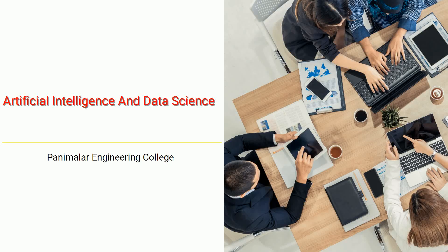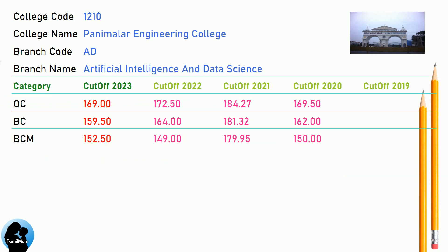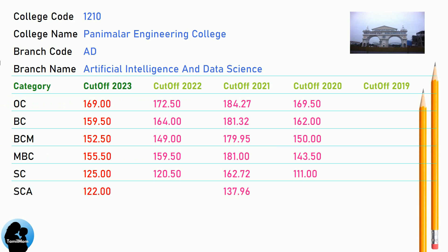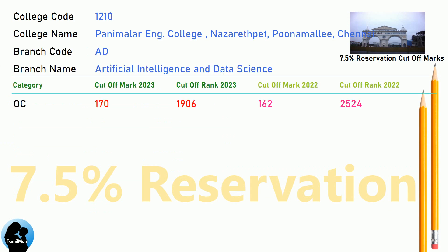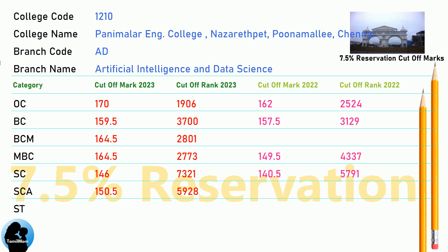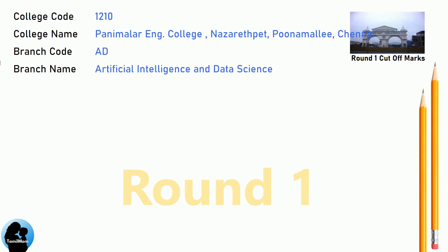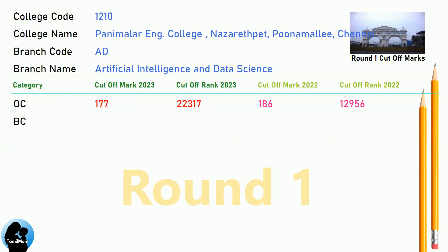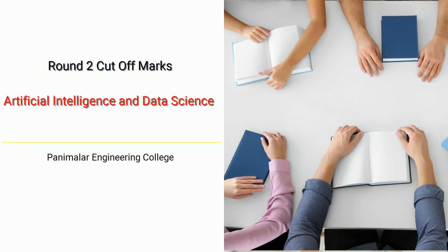DNA Cut-off for Panimalar Engineering College in Artificial Intelligence and Data Science. DNA 7.5 Reservation Cut-off for Panimalar Engineering College in Artificial Intelligence and Data Science. DNA Round 1 Cut-off for Panimalar Engineering College in Artificial Intelligence and Data Science. DNA Round 2 Cut-off for Panimalar Engineering College in Artificial Intelligence and Data Science.